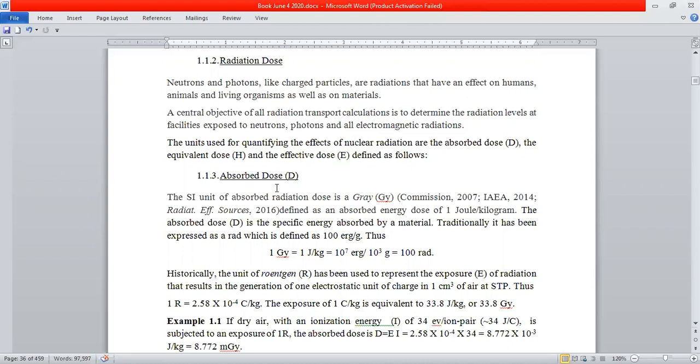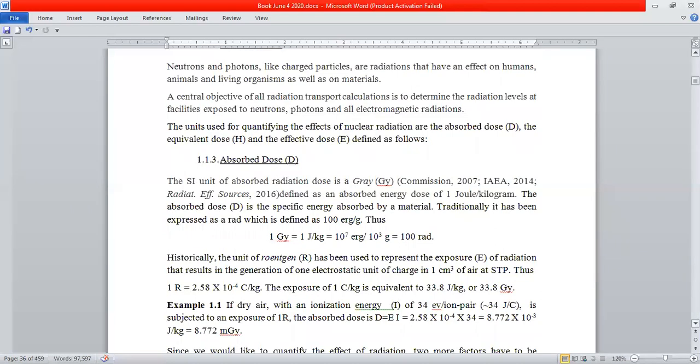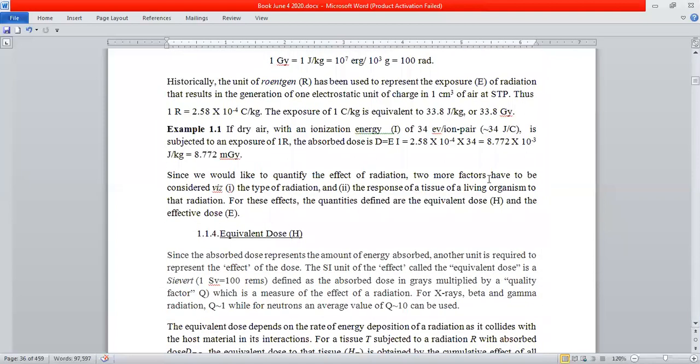Absorbed dose D—we use an SI unit of gray. Gray is just a joule of energy per kilogram. In the old units we used to talk of ergs and grams, so one gray equals 100 rad. Rad was the unit of absorbed dose we used many years back. Today's unit is the gray.